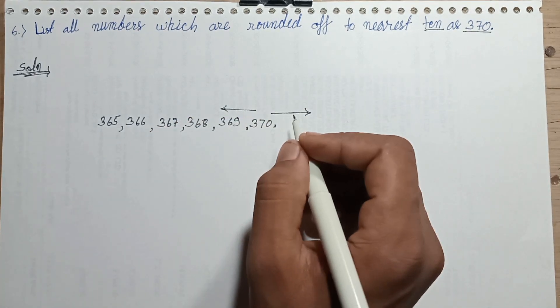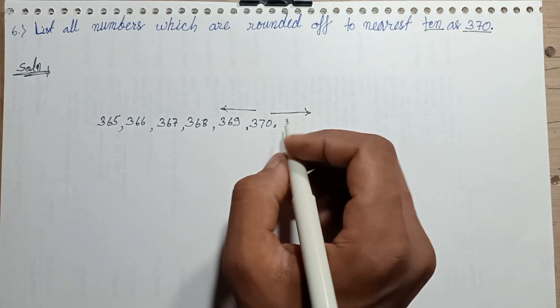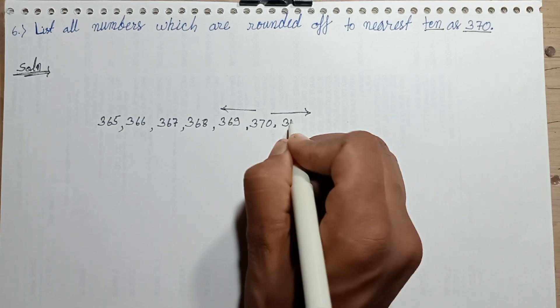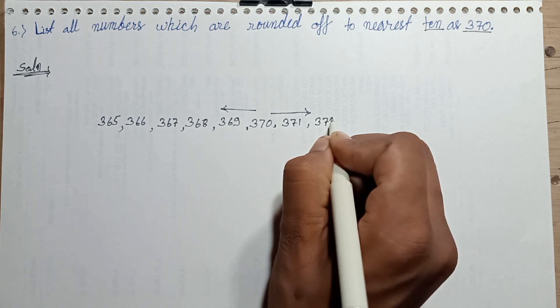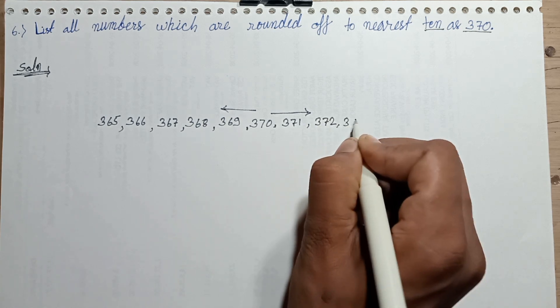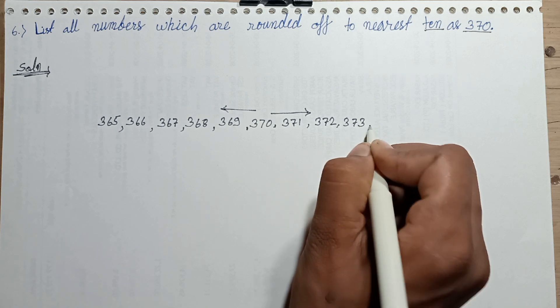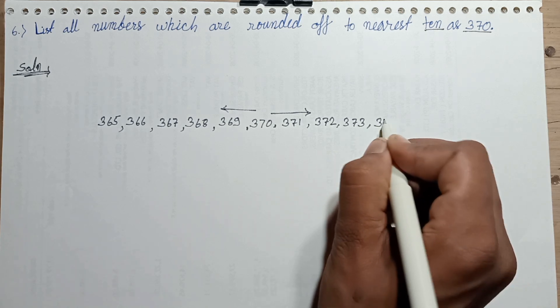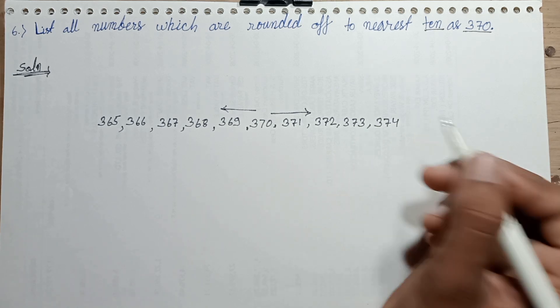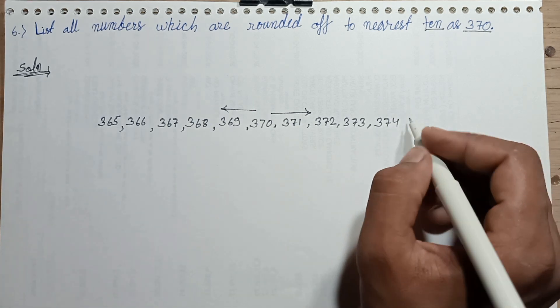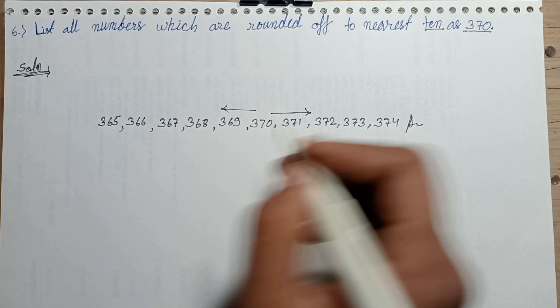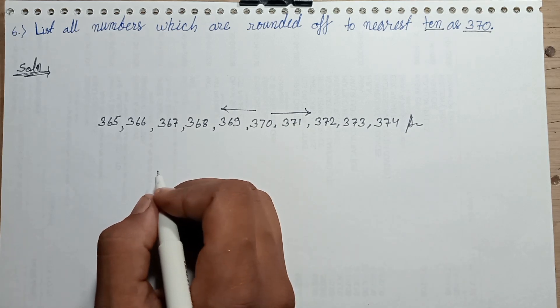First of all, increasing 4 times: 371, 372, 373, 374. Total 10 digits. Total 10 numbers. My answer.